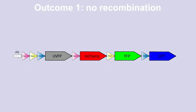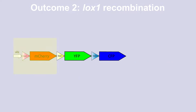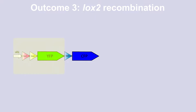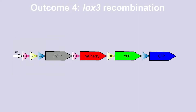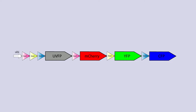Outcome number one: no recombination. This is the natural state of the construct, prior to Cre recombinase being active and cutting the lox sites. The ubiquitin promoter in front will express UVFP and thereby produce ultraviolet fluorescent proteins. Outcome number two: LoxP-1 recombination. Cre eliminates this portion of the construct, and the ubiquitin promoter will now express the mCherry gene, producing mCherry fluorescent proteins. Outcome number three: LoxP-2 recombination. Cre eliminates this portion, and the ubiquitin promoter will now express the yellow fluorescent protein gene. Outcome number four: LoxP-3 recombination. Cre eliminates this portion, and the ubiquitin promoter will now express the cyan fluorescent protein gene.